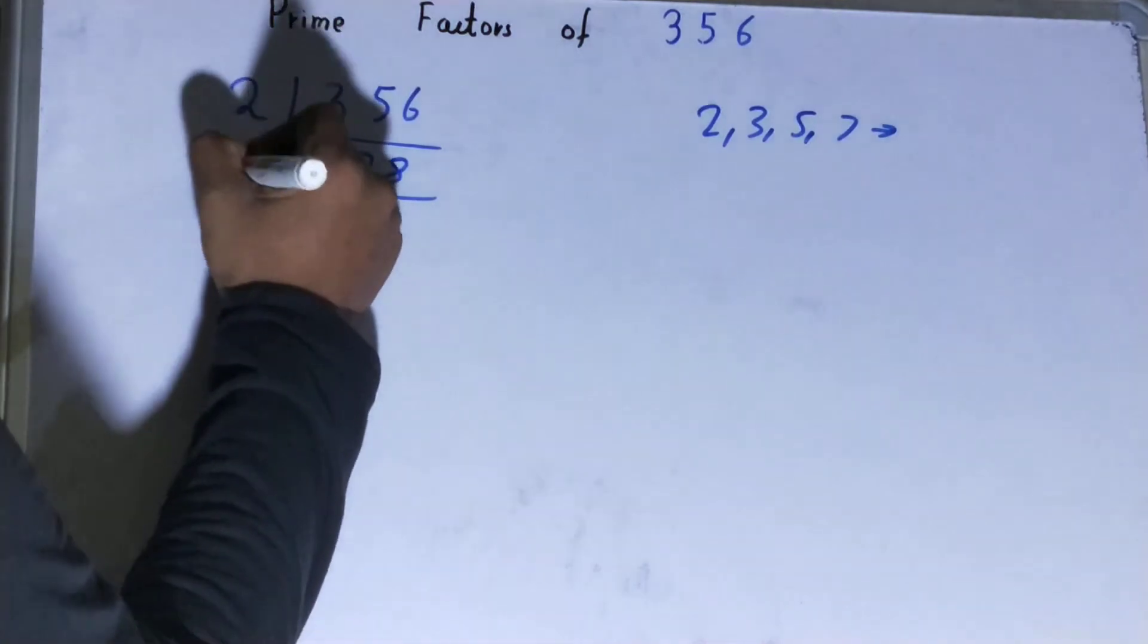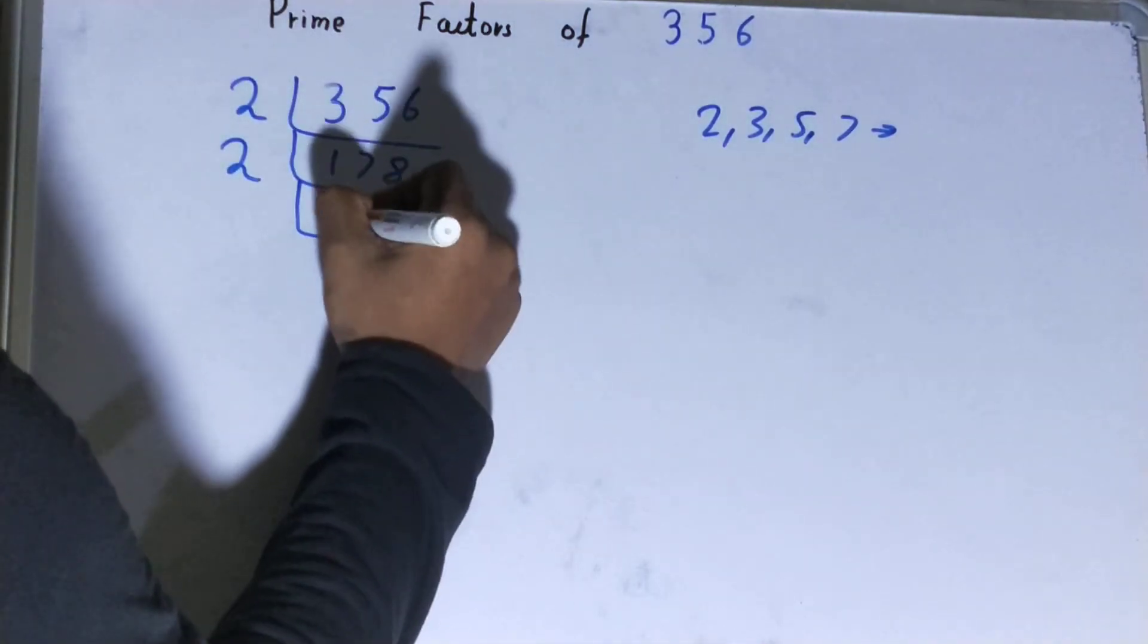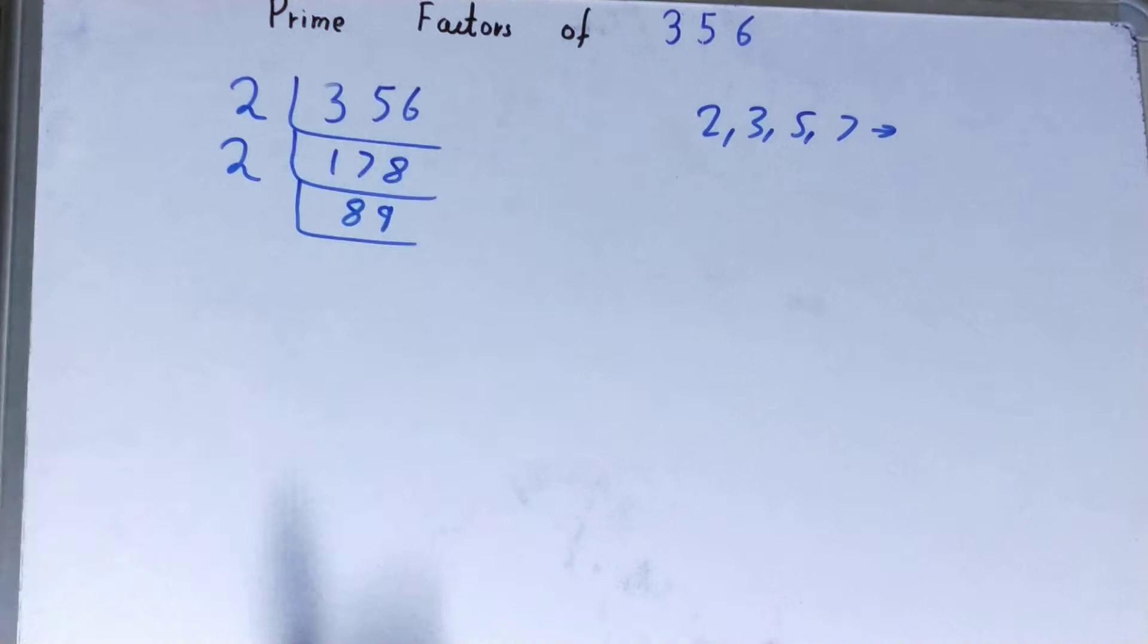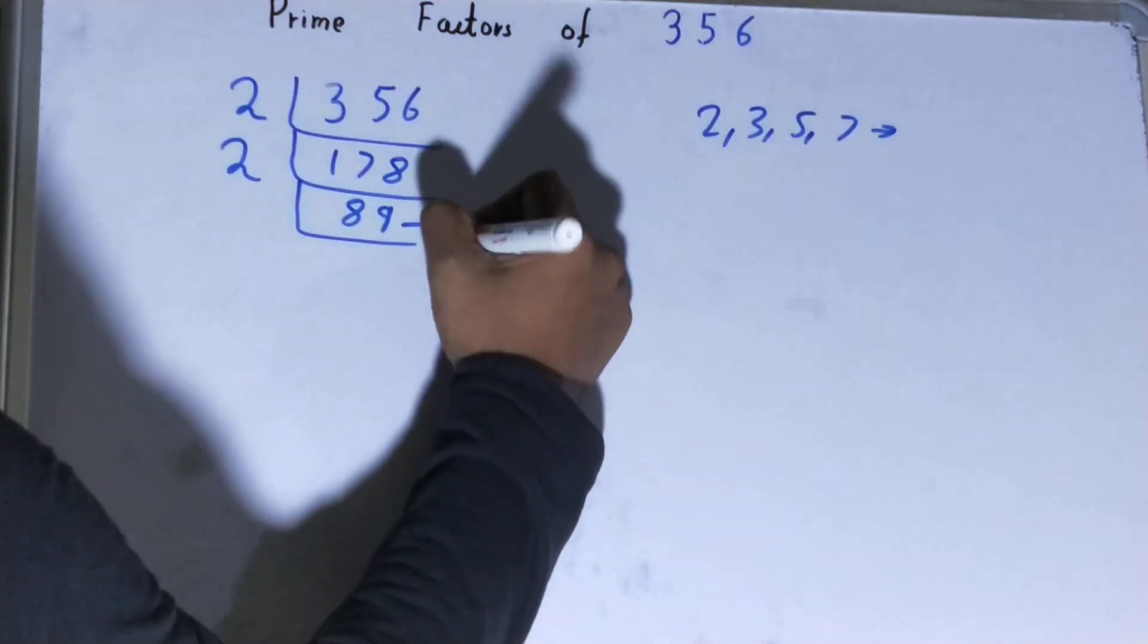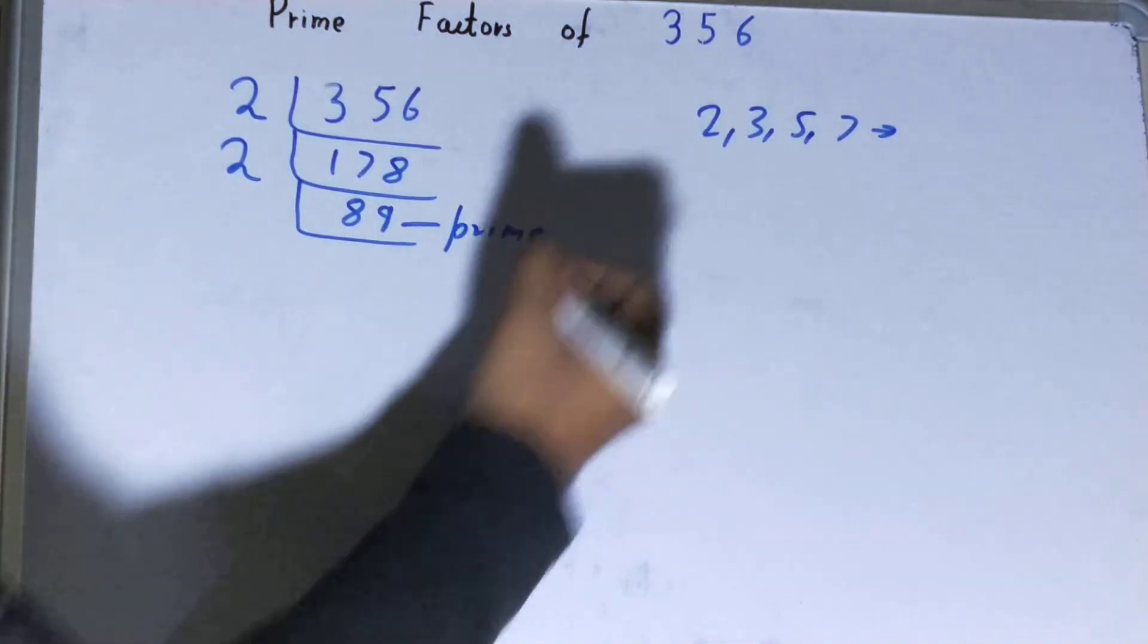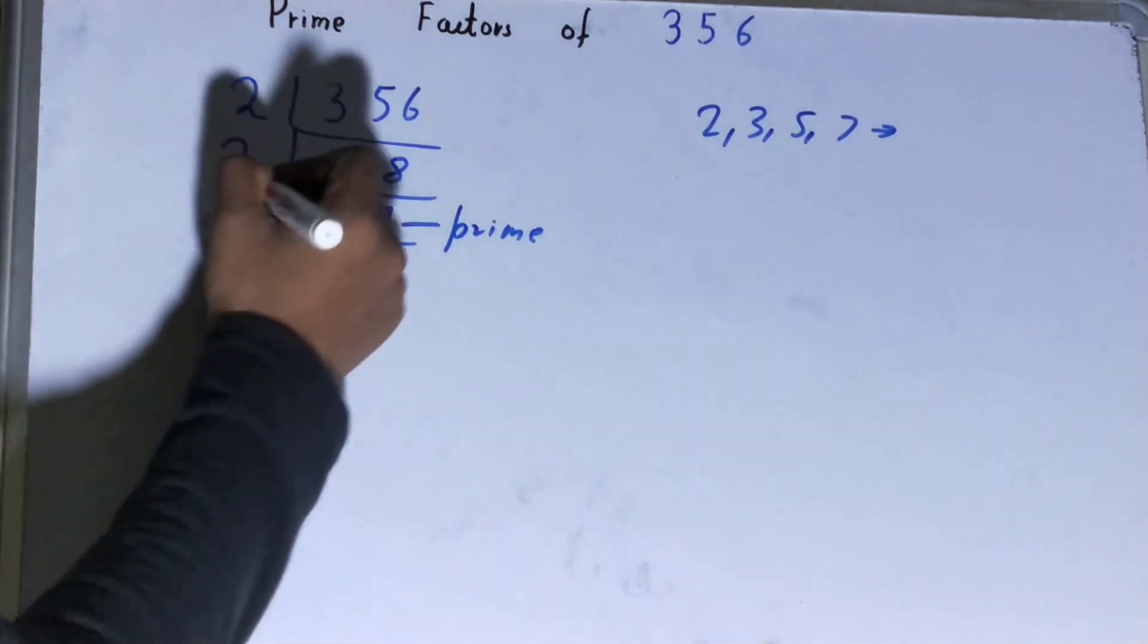Now is this 89 further divisible by 2? No, it is not because it is an odd number, and not only that, it is also a prime number, so it is only divisible by itself. To divide this 89, we need 89 on the left-hand side.